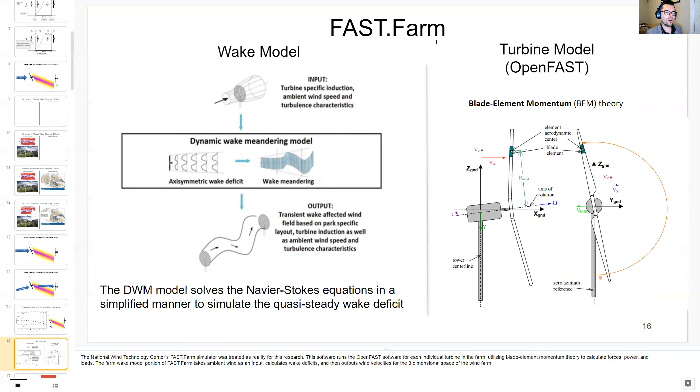I used the FAST.Farm wake simulator, wind farm simulator, as developed by the National Wind Technology Center. And this software runs the OpenFAST software for each individual turbine in the farm using blade element momentum to calculate forces, power, and loads. And then the farm wake model portion of FAST.Farm takes ambient wind as an input, and then it calculates wake deficits, and then outputs wind velocities for the three-dimensional space of the wind farm.